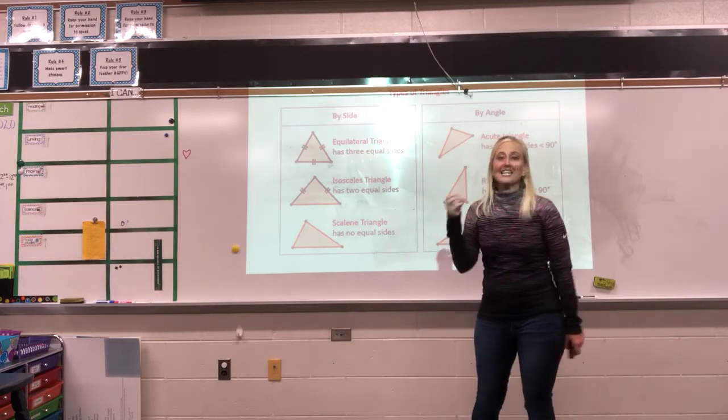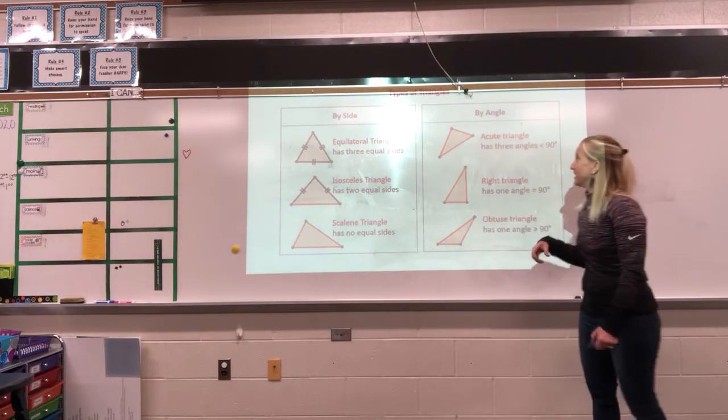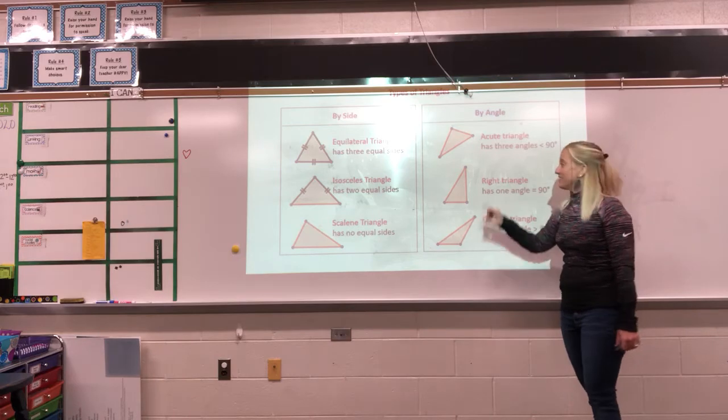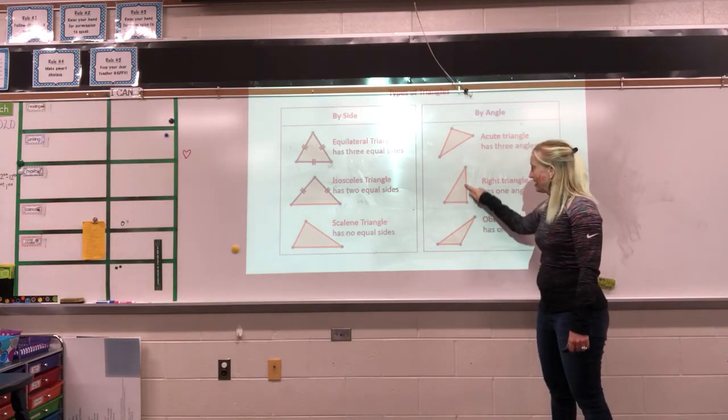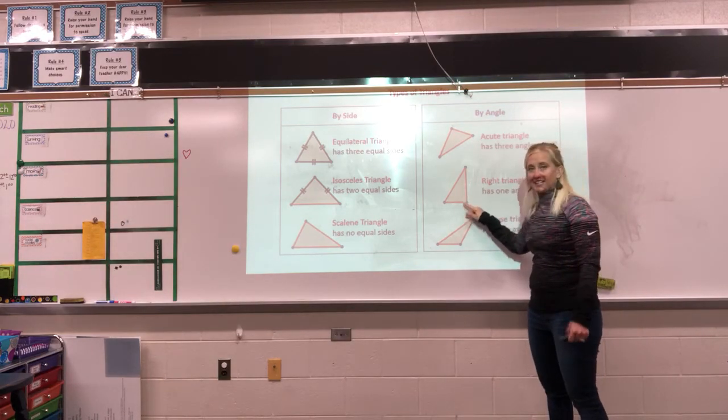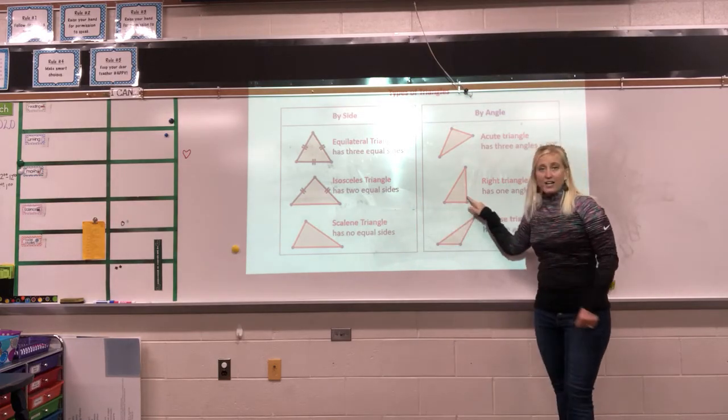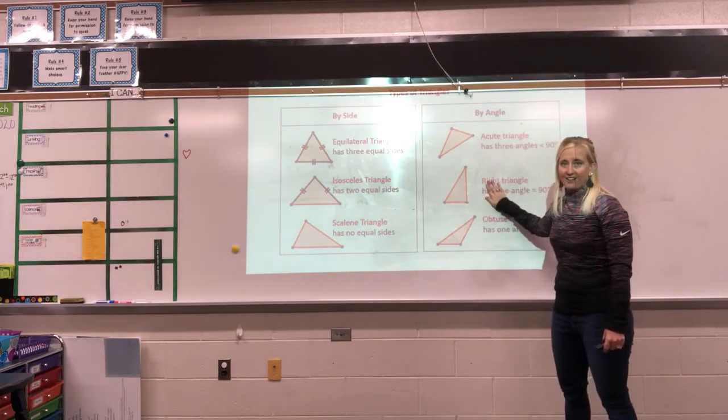But we can also look at the angles in a triangle to classify. So if we're looking by angles, if a triangle has a right angle, that's where it looks, it's exactly 90 degrees, it looks like that corner of a box. If it has a right angle, it's a right triangle. Okay?